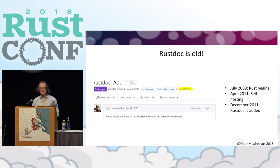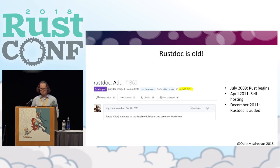As a side note, Rustdoc is kind of old. I dug up the PR that first added the bare bones things that scraped out doc attributes — this was before doc comments were even a thing. The timeline: July 2009, Graydon started writing Rust as a private project; shortly after it was made public; in April 2011 it switched from being written in OCaml to being written in Rust itself — that's when it started self-hosting. Just a few months later, Rustdoc was added. So Rustdoc is almost as old as the compiler.